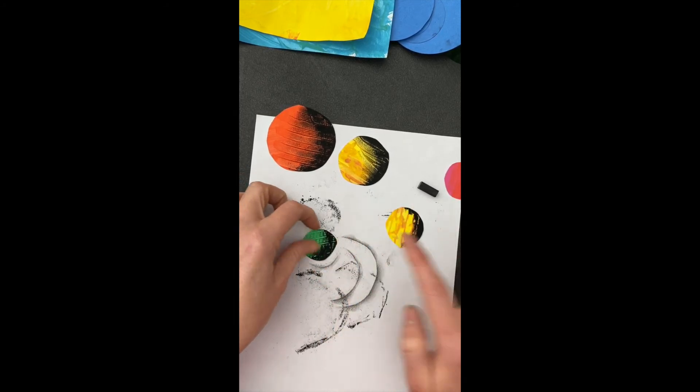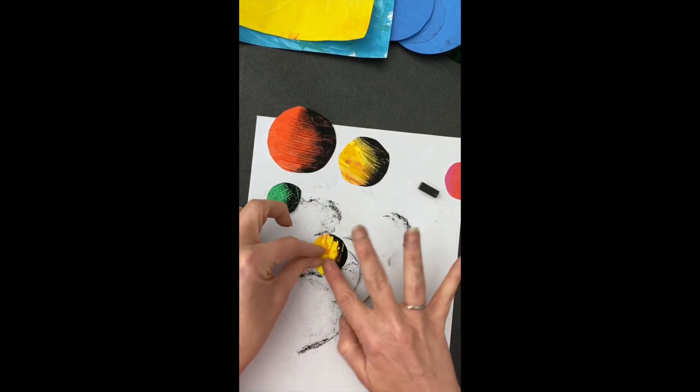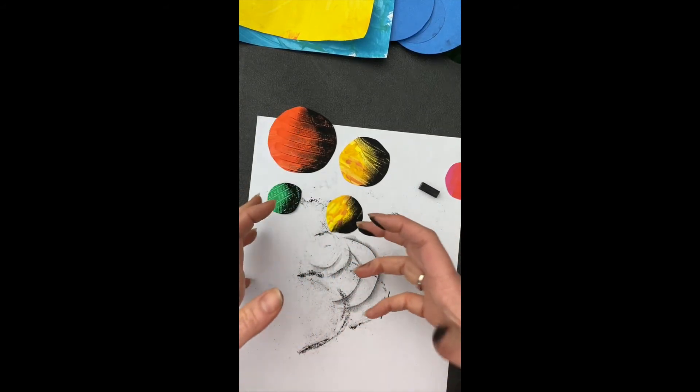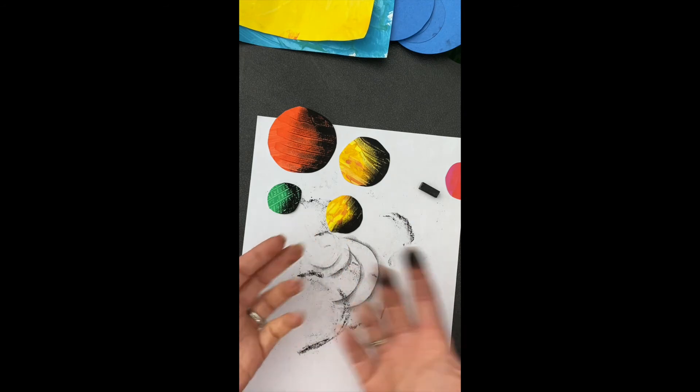So once you do this, you have all your shapes smooth and have that illusion of form. Go clean your hands and come right back.